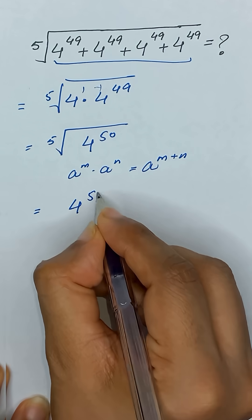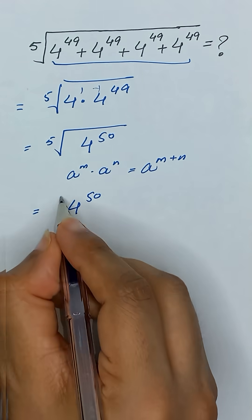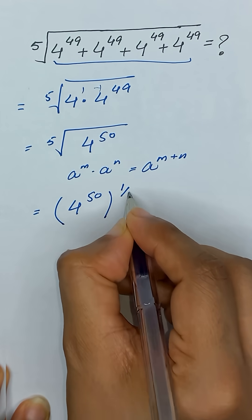Okay, 4 to the power 50. Now, we can write fifth root as power 1 divided by 5.